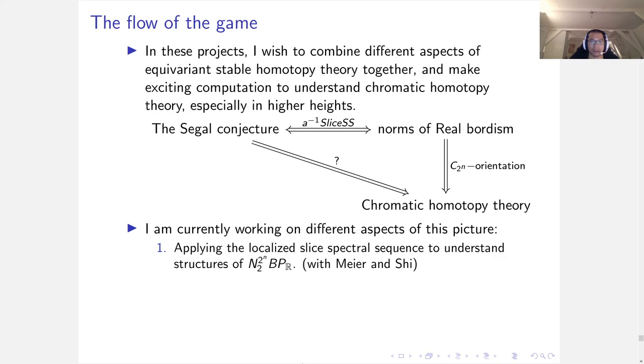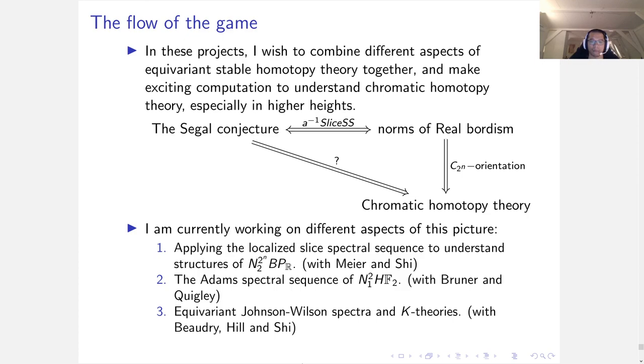With Meier and Shi, we apply the localized slice spectral sequence to understand structures of norm BP_R. With Burklund and Quigley, we apply the Adams spectral sequence to understand norm HF2 itself. With Beardsley, Hill and Shi, we investigate equivariant Johnson-Wilson spectra and higher equivariant K-theories. Finally, I want to understand what's the direct relationship between the Segal conjecture and chromatic homotopy theory and generalize it to odd primes.